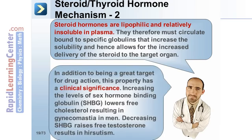In addition to being a great target for drug action, this property has clinical significance. Increasing the levels of sex hormone binding globulin (SHBG) lowers free testosterone, resulting in gynecomastia in men. Decreasing SHBG raises free testosterone, resulting in hirsutism.